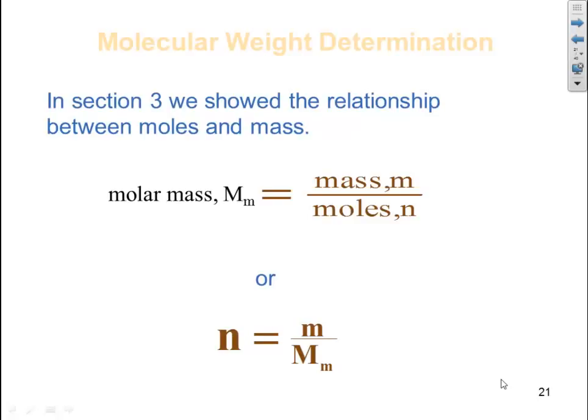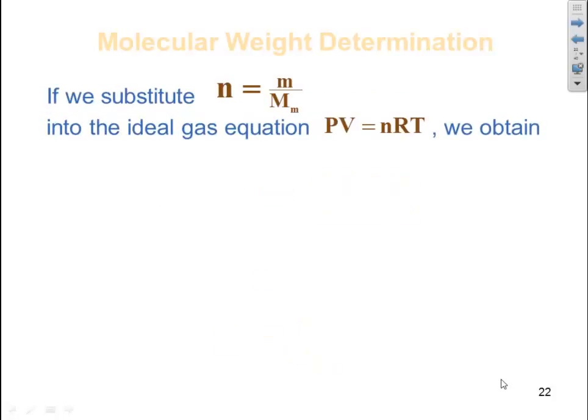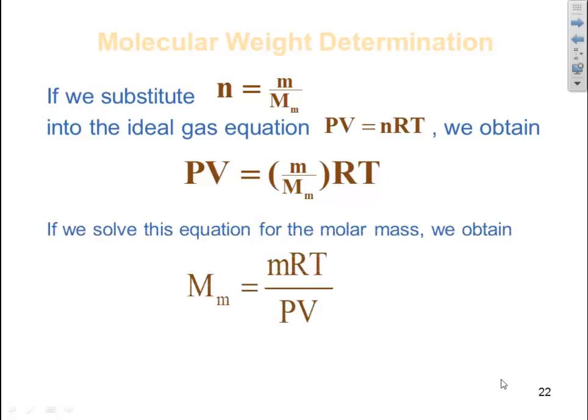This is going to become important because we can use this in our PV equals nRT equation to solve for molar mass and density. So if we substitute n equals m over molar mass into the ideal gas law PV equals nRT, we obtain PV is equal to mass over molar mass times RT. If we solve this equation for the molar mass we obtain molar mass is equal to the mass times R times T divided by PV. Once again T will have to be absolute temperature and R is the ideal gas constant.